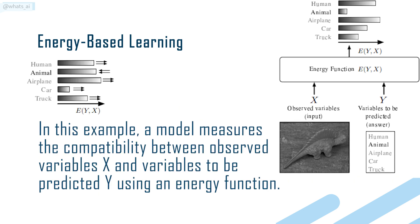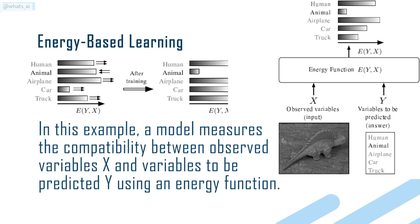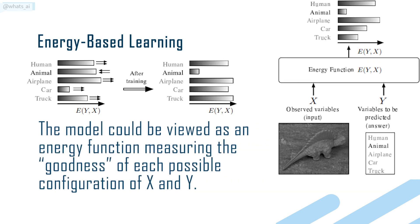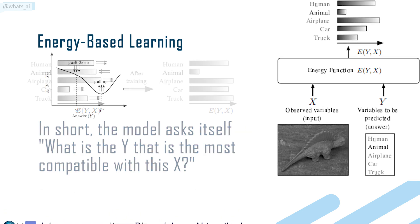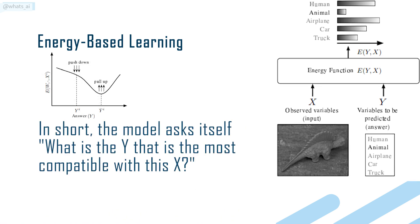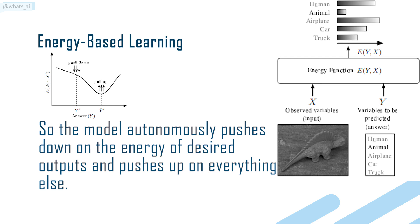In this example, a model measures the compatibility between observed variables X and variables to be predicted Y using an energy function. The model could be viewed as an energy function measuring the goodness of each possible configuration of X and Y. In short, the model asks itself: what is the Y that is the most compatible with this X? So the model autonomously pushes down on the energy of the desired outputs and pushes up on everything else, orienting the model to a low energy output where the future guesses are more plausible.